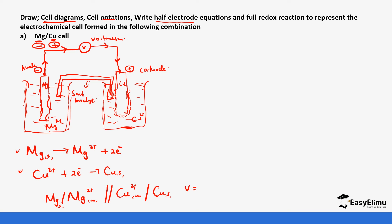The number of volts would be placed on the side of the cell notation, but we will calculate the e-cell (EMF) in a different lesson, so we are not putting specific voltage values here. We have now drawn the diagram, written the half equations, and shown the cell notation — that is how you answer this question.